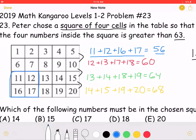However, we want a sum greater than 63, so this is incorrect. This square does not work.